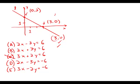2×3 does not equal -6, so that's out. And 3×3 is not -6, so that's out also. So the only possibilities that work for the point (3,0) are A and B.